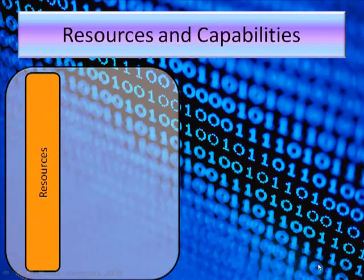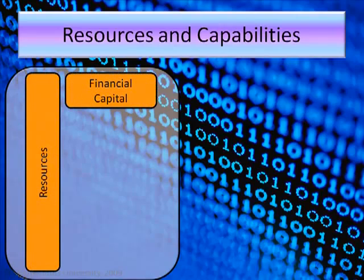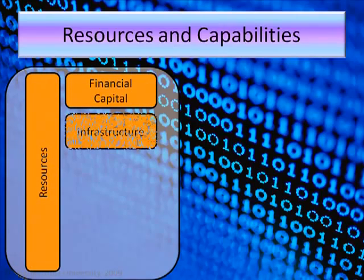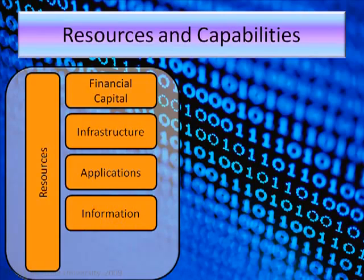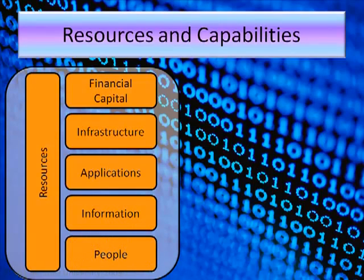We've got our resources — for example, financial capital, money, infrastructure like hardware and network items. We've got applications, the software, business applications and office applications. We've got information, data and records, and we've got people also being resources.